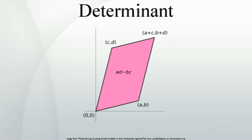Laplace's formula expresses the determinant of a matrix in terms of its minors. The minor M_{i,j} is defined to be the determinant of the (n−1)×(n−1) matrix that results from A by removing the i-th row and the j-th column. The expression (−1)^{i+j} M_{i,j} is known as a cofactor. The determinant of A is given by expanding along any row or column. For the example 3×3 matrix, Laplace expansion along the second column (j=2) yields the result. However, Laplace expansion is efficient for small matrices only.